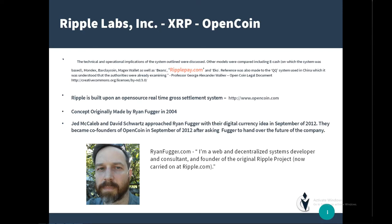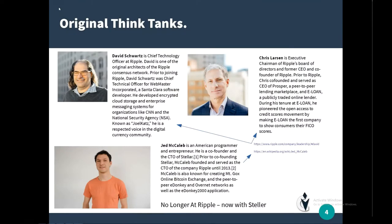Ryan Fugger came up with this real-time gross settlement system, and then Jed McCaleb and David Schwartz approached him with their digital currency idea in September of 2012. The three of them became co-founders of the company. Jed McCaleb and David Schwartz became co-founders after asking Ryan Fugger to hand over the company so they could continue with their plan. The original think tanks after the deal were Jed McCaleb, David Schwartz, and Chris Larson.